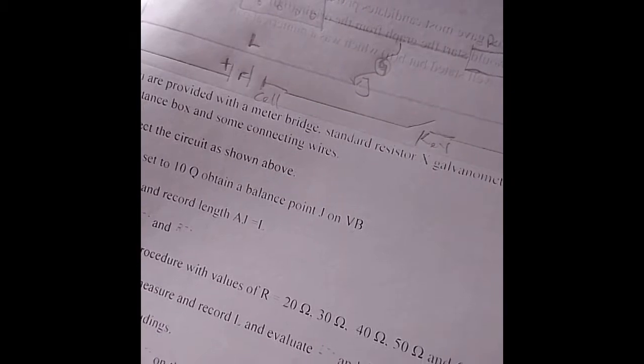We have the resistance box, the galvanometer, our resistor, key, jokey, and the cell in connection to the meter bridge.